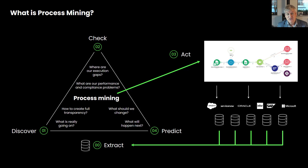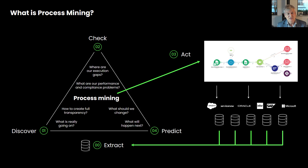After creating transparency, you can use process mining to do conformance checking. You can indicate which behaviors are undesirable, and if such things happen — we often call these execution gaps — we can automatically generate alerts. So we can see where the bottlenecks are, where the deviations are, and what is causing them. After this root cause analysis of execution gaps, we can automatically trigger actions. For example, Celonis has a so-called action engine or action flows, where based on inefficiencies and problems, you automatically trigger workflows coupled to existing information systems to address the witnessed problems.